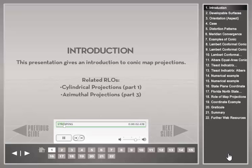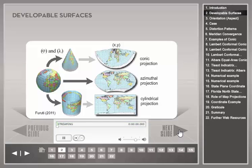This presentation builds upon concepts introduced in the cylindrical projections presentation, which is the first part of the map projection RLO series. This RLO presentation explores conic map projections in greater detail; the third part of this series focuses on azimuthal projections. Recall that there are three primary developable surfaces for projecting the spherical Earth's surface on a two-dimensional map plane: a cone, a flat plane, or a cylinder. This presentation focuses on the family of conic projections.